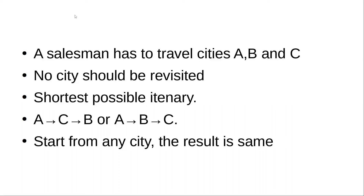In a traveling salesman problem, the salesman has to travel cities A, B, and C. He has to not revisit any city — no city should be revisited — and he has to take the shortest possible itinerary. He can start with A then visit C then go to B, or start with A then go to B and then go to C. For that matter, he can start from any city; the result would be the same.